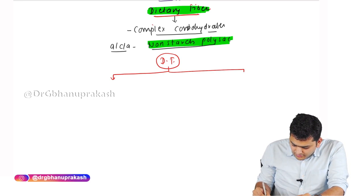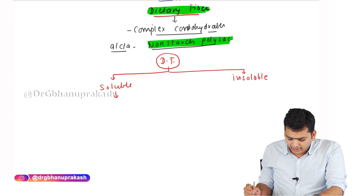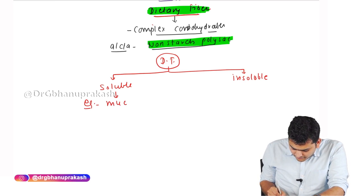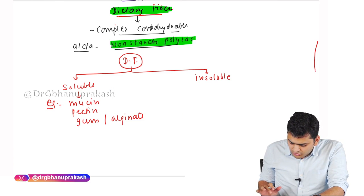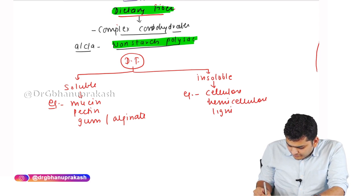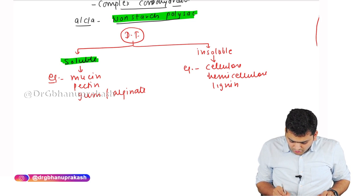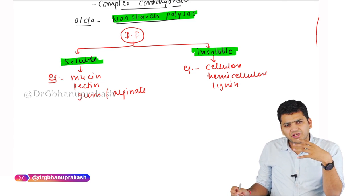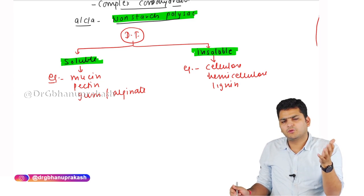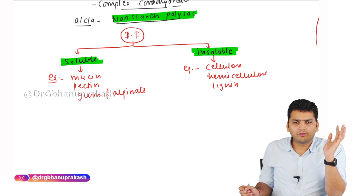Dietary fibers are divided into two types: soluble and insoluble. Examples of soluble dietary fibers are mucin, pectin, gum, and alginate. Insoluble dietary fibers include cellulose, hemicellulose, and lignin. One should know which is soluble and which is insoluble, as exam questions often ask 'all of the following are soluble except' or vice versa.